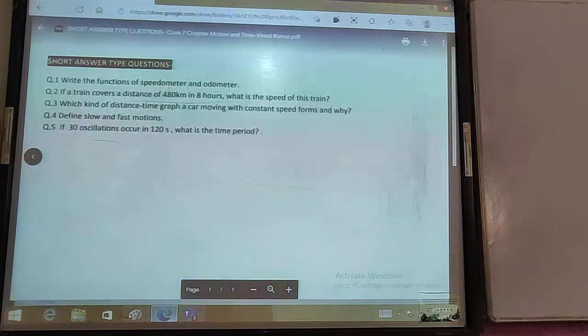The time taken by the pendulum to complete one oscillation is the time period. So here, 30 oscillations in 120 seconds. One oscillation, how much time? 120 upon 30, which is 4. The time period of this oscillating object is 4 seconds.